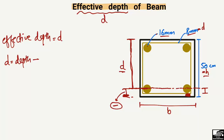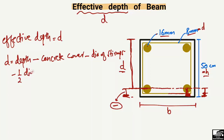For this beam, the concrete cover is 2.5 centimeters. The concrete cover depends on many conditions, but here we assume 2.5 cm. We then subtract the diameter of the stirrups, which is 8 millimeters. Finally, we subtract half the diameter of the main bar.